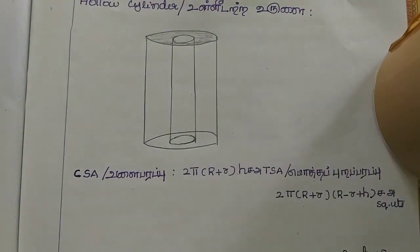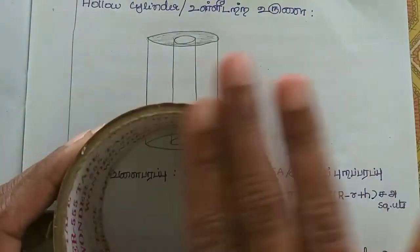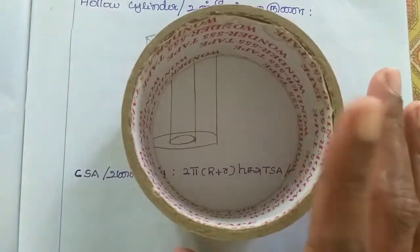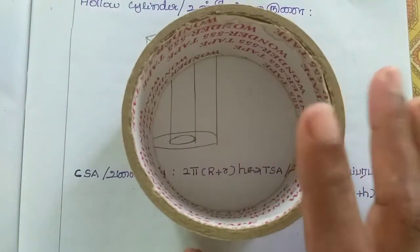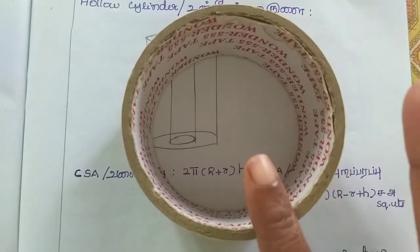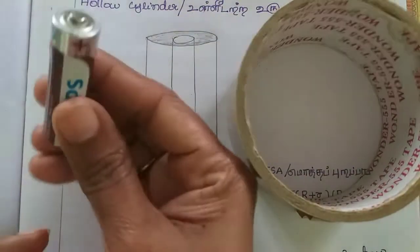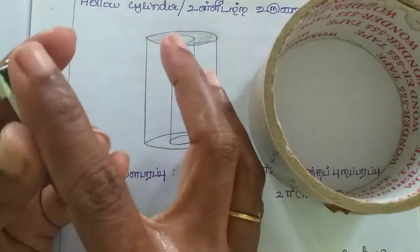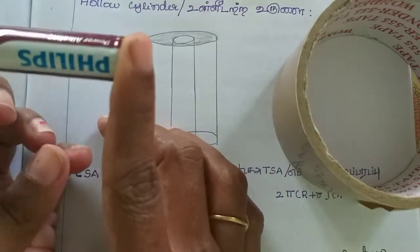This is the CSA — curved surface area. This is the total surface area — top and bottom closed. That is the CSA. Now this is a hollow cylinder. This is a normal cylinder — with the top and bottom — that is the total surface area.